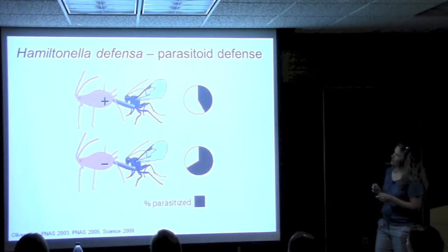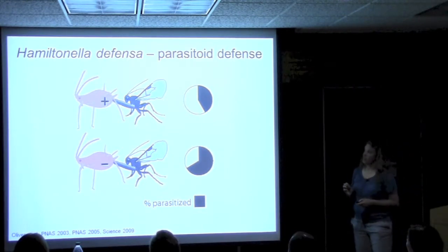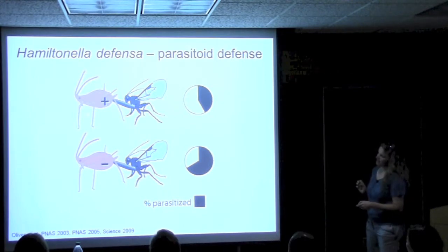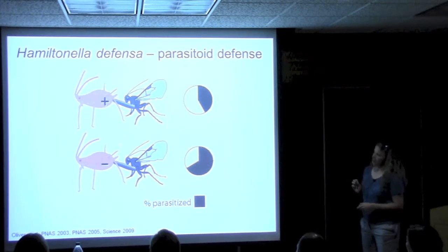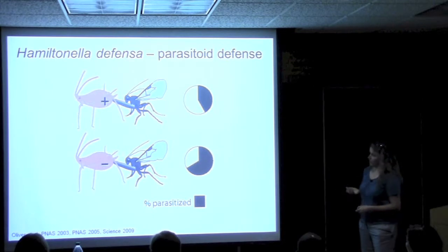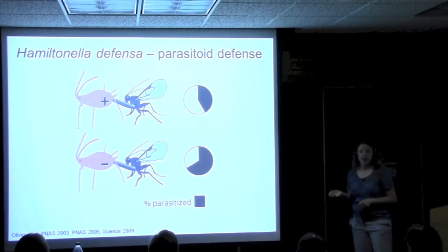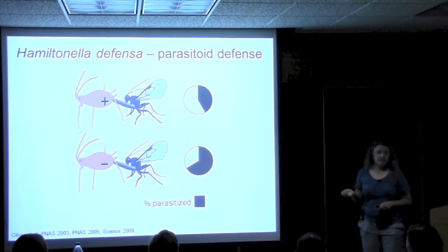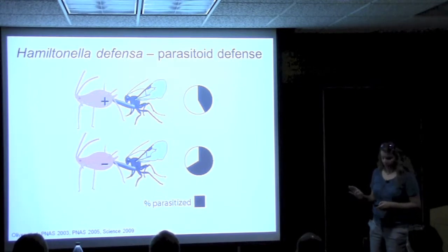The symbiont Hamiltonella actually protects the pea aphid against parasitism. If a pea aphid lacking the bacteria is attacked by the wasp Aphidius erbi, by and large the attack is successful — an egg is deposited, it develops, and a wasp is successfully produced more than half the time. On the other hand, when the aphid has the bacteria, the same attack occurs, the egg is laid, but the embryo inside the aphid dies as a consequence of the bacteria.